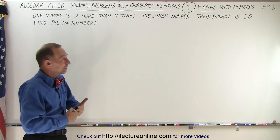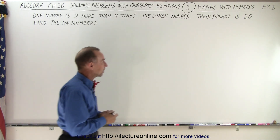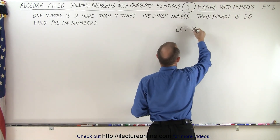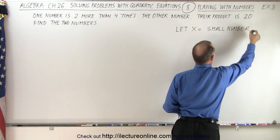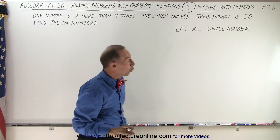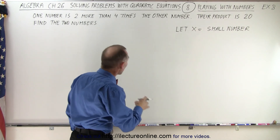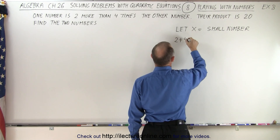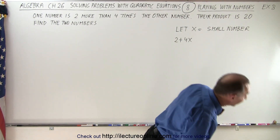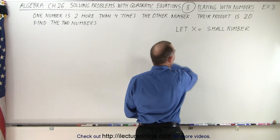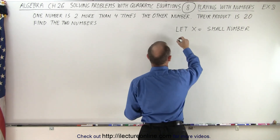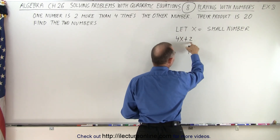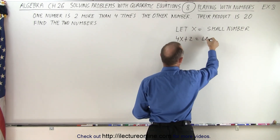We start out by defining the numbers in terms of x. So we're going to let x equal the small number. The larger number is two more than four times the smaller number. So therefore, we can say that four x plus two — that means two more than four times the small number — equals the large number.